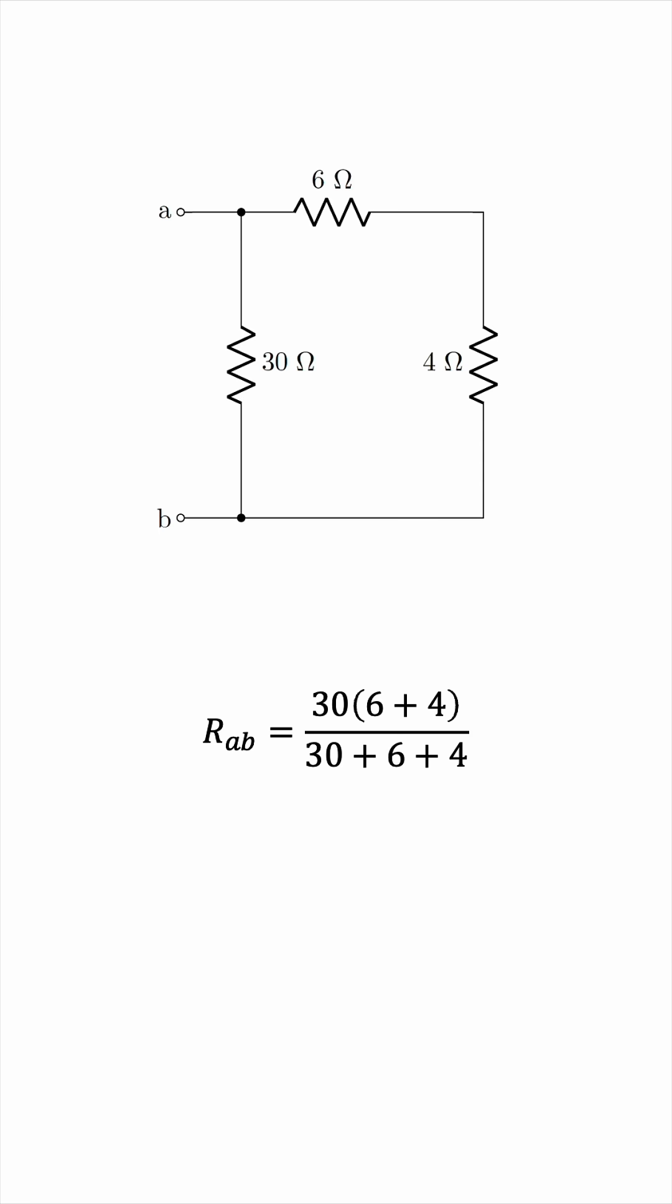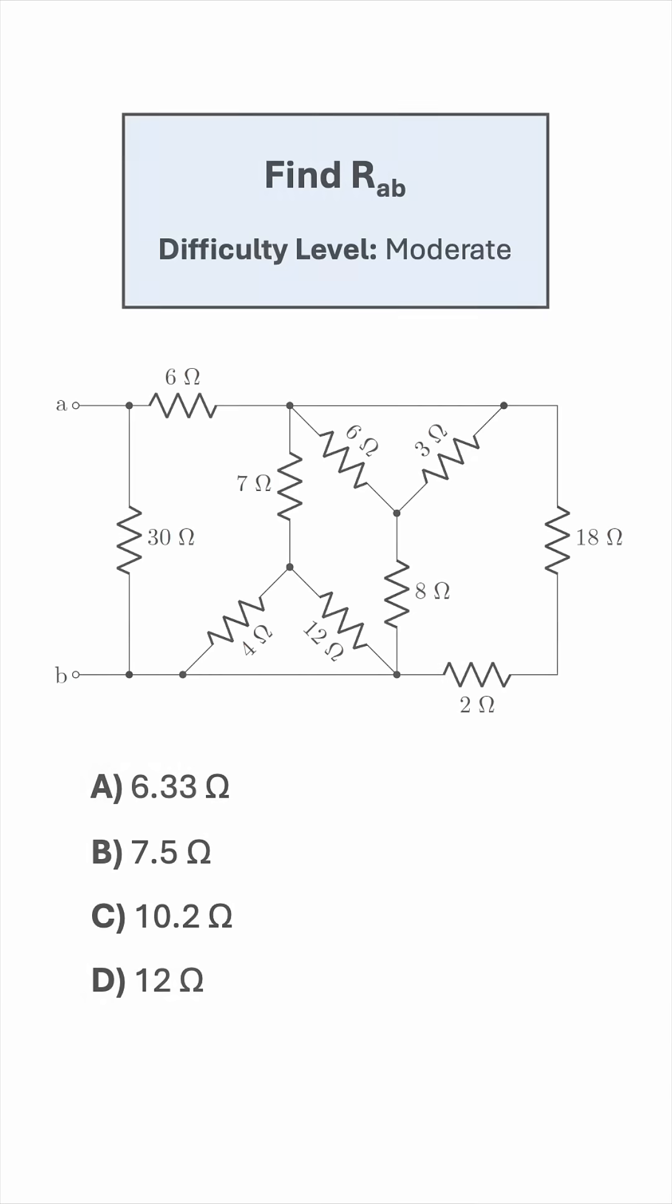Or 30 times 10 over (30 plus 10). That's 300 over 40, which works out to be 15 over 2, or 7.5 ohms. So the correct answer is B.